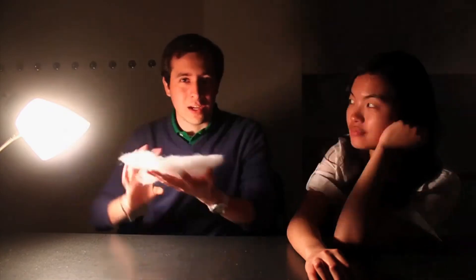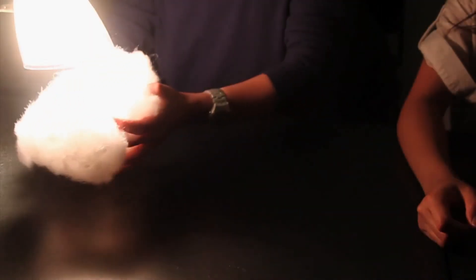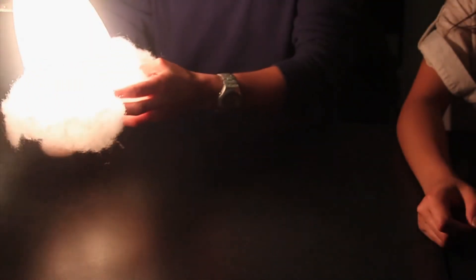So this is the Sun, this table is the Earth, and this is a normal cloud. With more aerosols, more light will be reflected into space instead of reaching the surface.